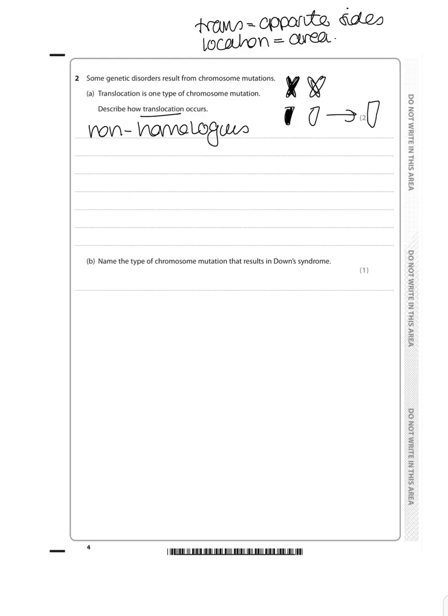And translocation is when one part of a chromosome breaks off and joins to another non-homologous chromosome. So what happens is this.